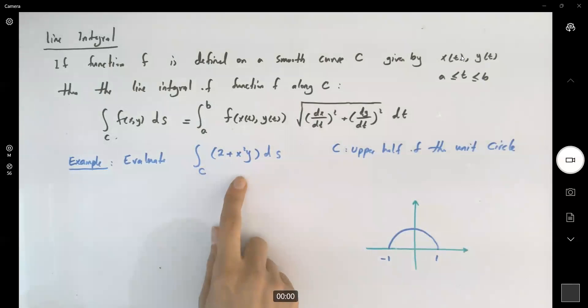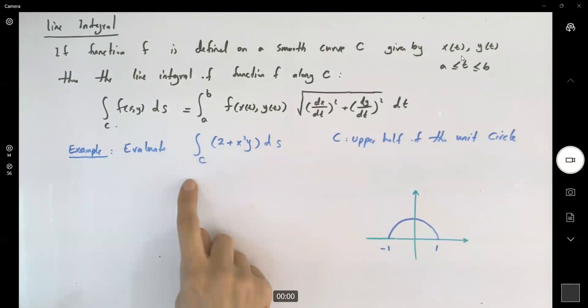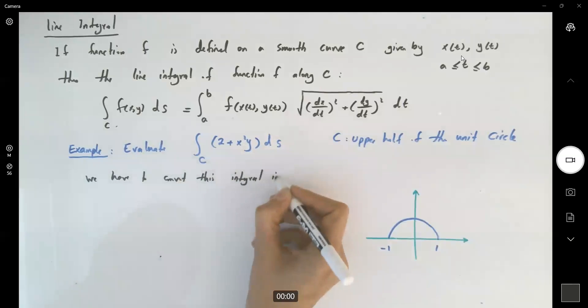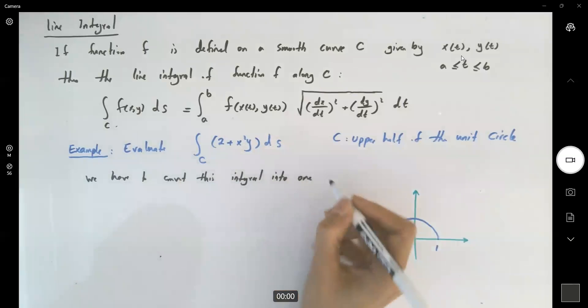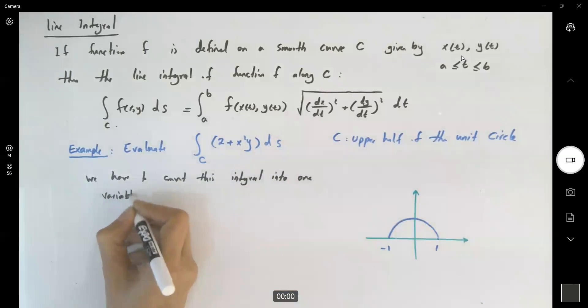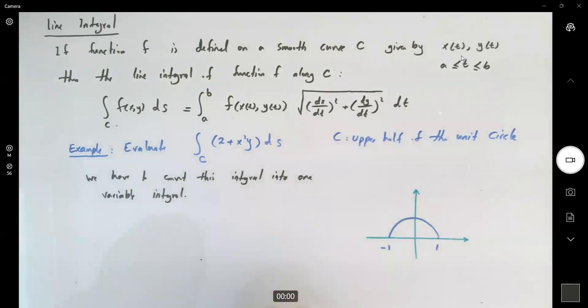So as you can see, you have an elementary integral with two variables. You have to get rid of one of these variables or convert them into a third variable. There's no other choice. We have to convert this integral into one variable integral. There's no other way.